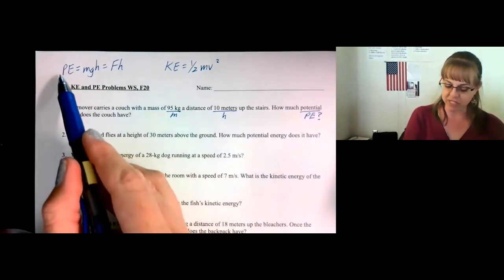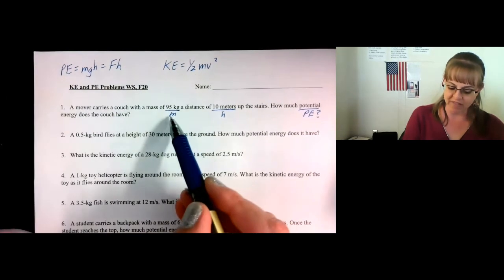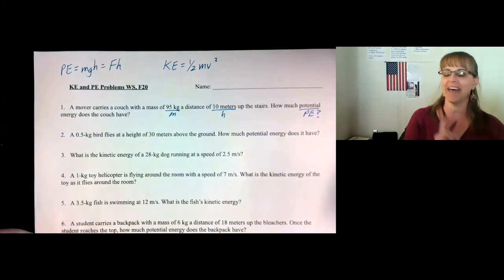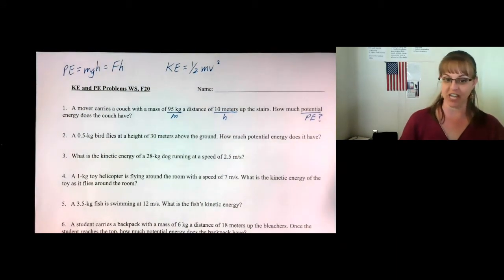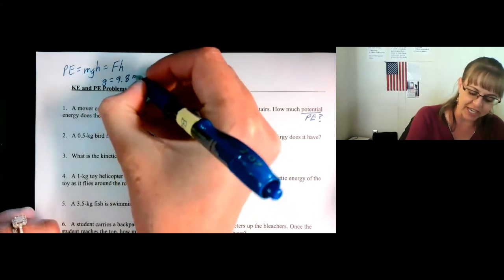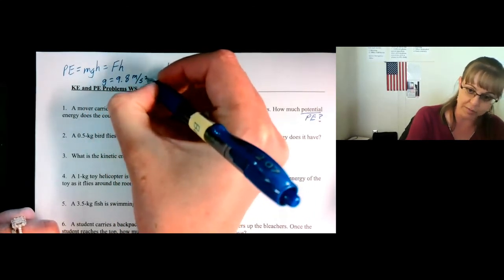So we want potential energy. The formula is potential energy. We have M, we have H. Wait a minute, what about G? Oh yeah, that's found on your reference table. And G equals 9.8 meters per second per second, or meters per second squared.